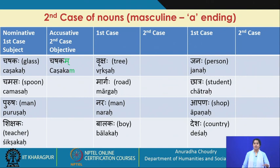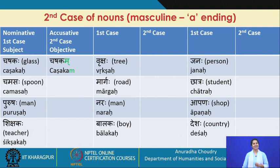Let's look at masculine words in the accusative: chashakaha → chashakam, chamasaha → chamasam, purushaha → purusham, shikshakaha → shikshakam, vrikshaha → vriksham, margaha → margam, naraha → naram, balakaha → balakam, janaha → janam, chhatraha → chhatram, apannaha → apannam, deshaha → desham.